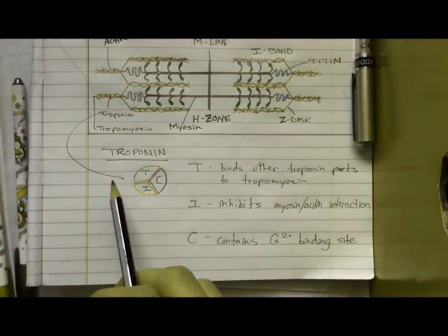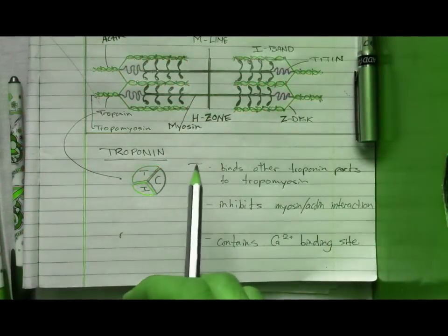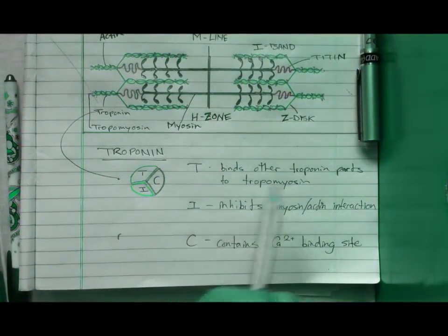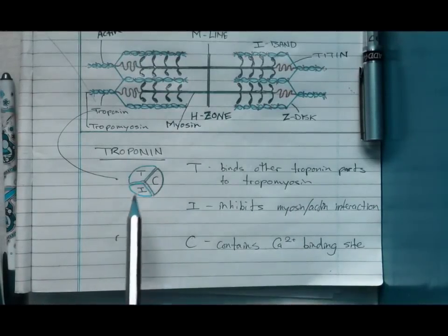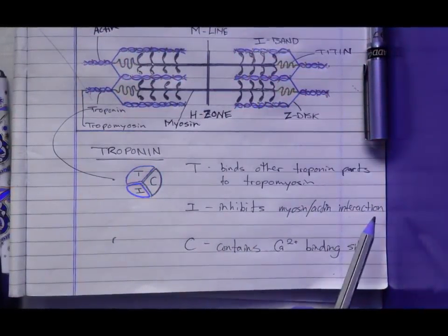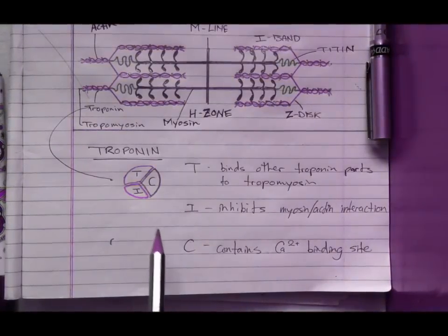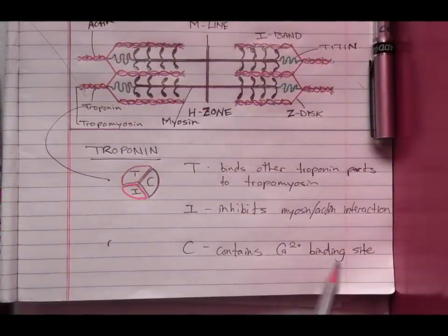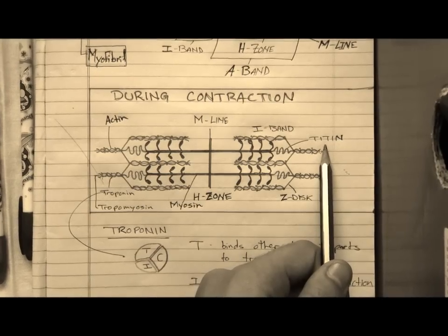The first is troponin T, which binds other troponin parts to tropomyosin. The second is troponin I, which inhibits myosin-actin interaction. And the third is troponin C, which contains the calcium binding site. Titin is a muscle protein which binds the Z-lines to the M-lines.